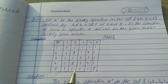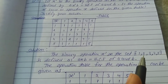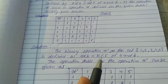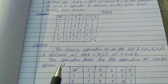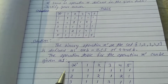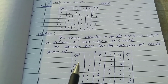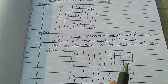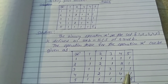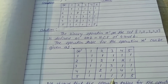Row 5: 1 1 1 1 5. Solution: The binary operation star* on the set {1, 2, 3, 4, 5} is defined as a star* b = HCF of a and b. The operation table for star* is: star* | 1 2 3 4 5, row 1: 1 1 1 1 1, row 2: 1 2 1 2 1, row 3: 1 1 3 1 1, row 4: 1 2 1 4 1, row 5: 1 1 1 1 5.